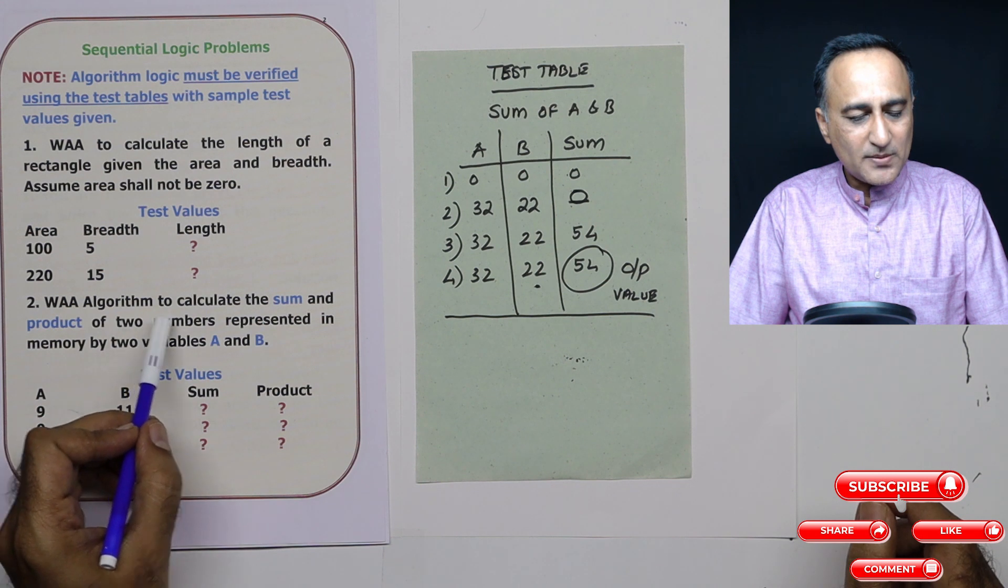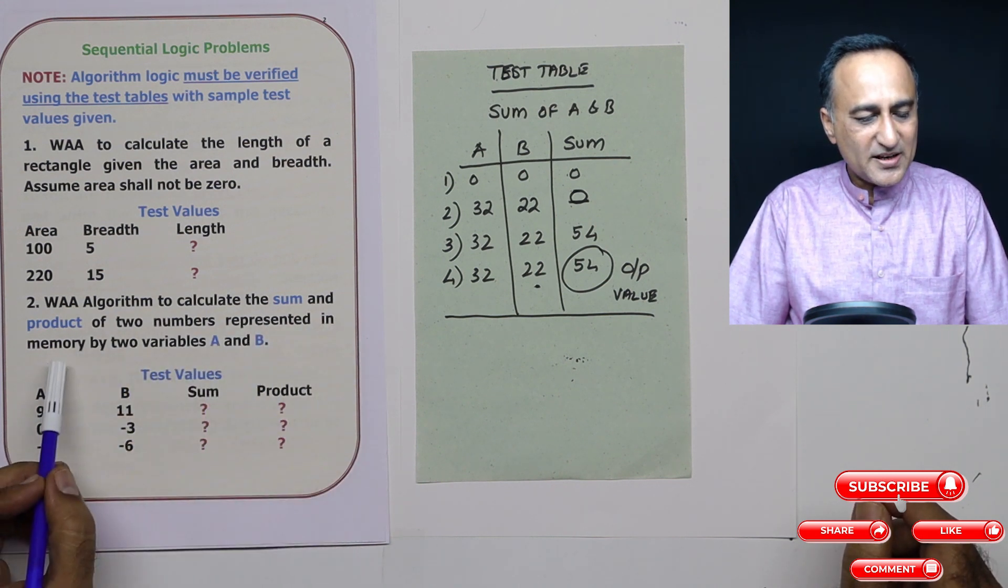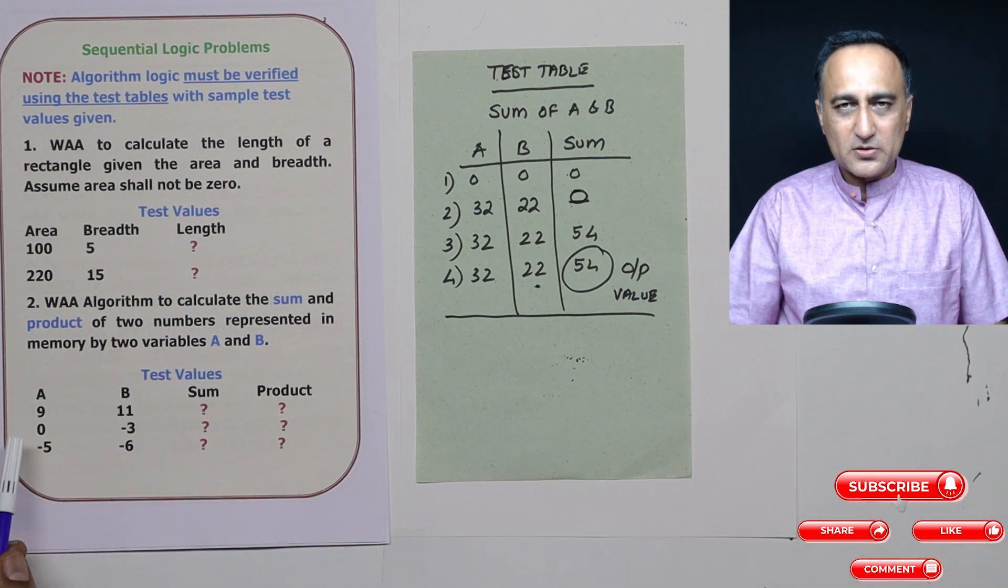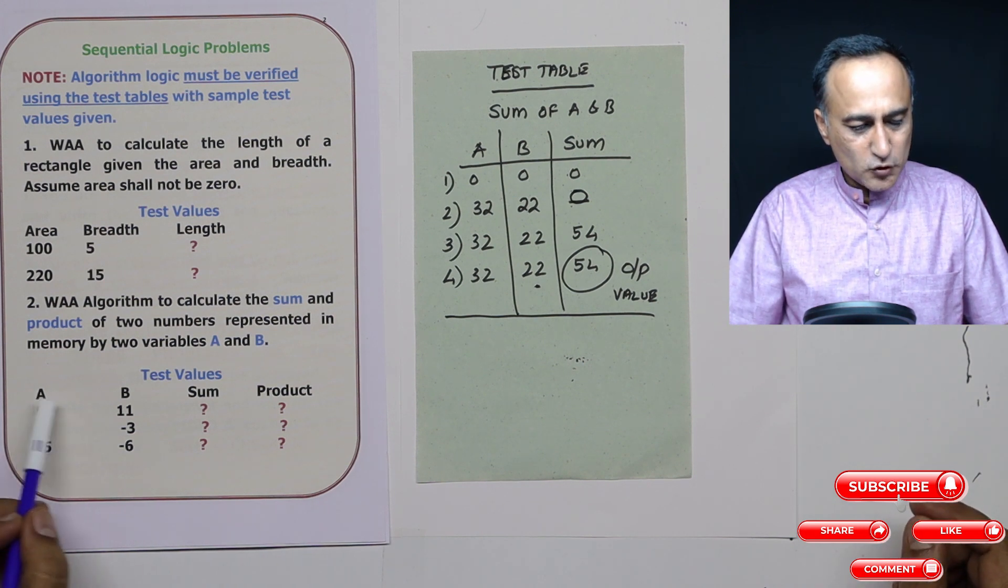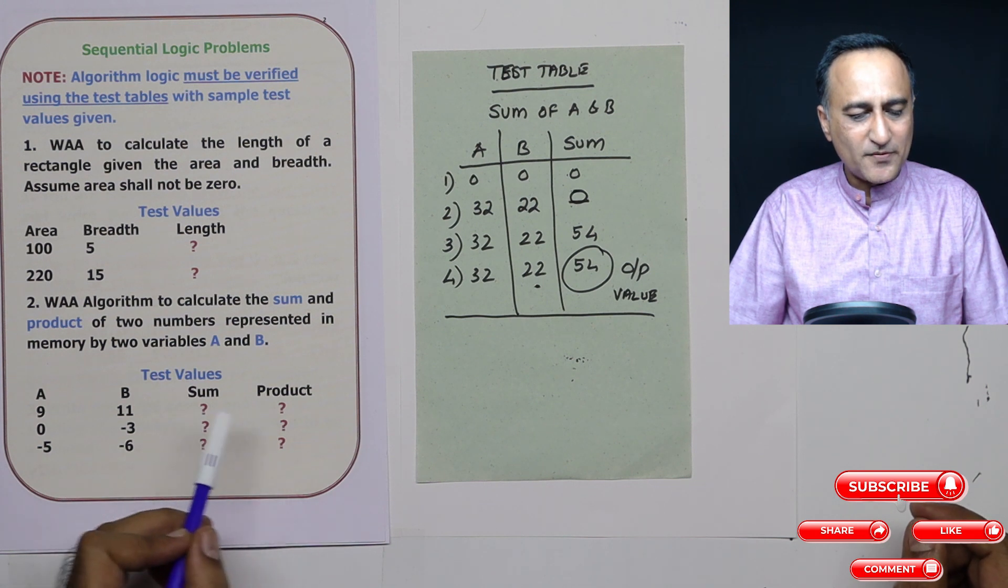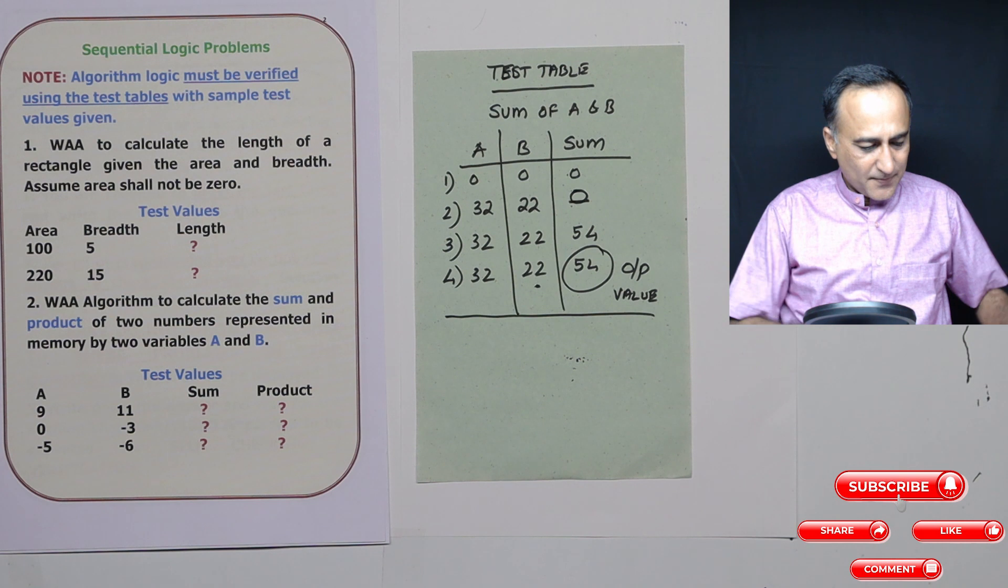Next algorithm, write algorithm to calculate the product and sum of two numbers represented in memory by two variables A and B. So for the same two variables, you're going to get the sum as well as the product. So these are the values of A and B, you should list the values of sum, just see what are the values of sum and product you are getting.